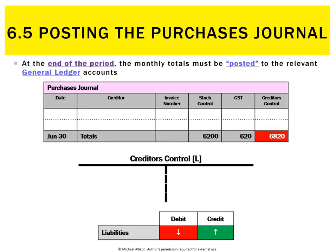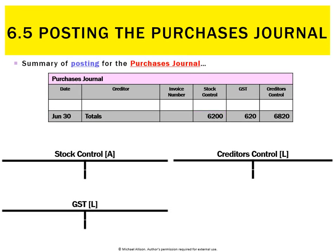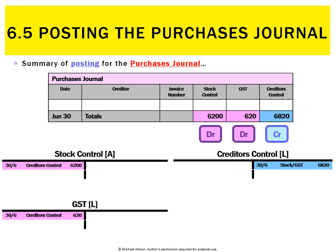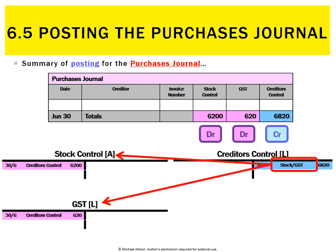We've then got the creditors control column — that's the total amount we're going to owe our creditors, so a liability is going to increase, and when a liability increases that'll be a credit. We always post to the general ledger on the last day of the month. The stock control figure was a debit, the GST figure was a debit, and on the credit side we had one giant total going to creditors control. The reference for stock control and GST will be creditors control, and in creditors control we'll have a double reference of stock slash GST.